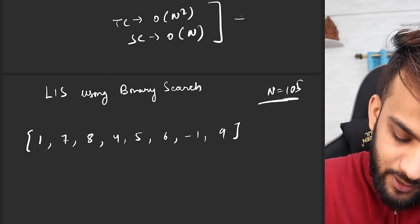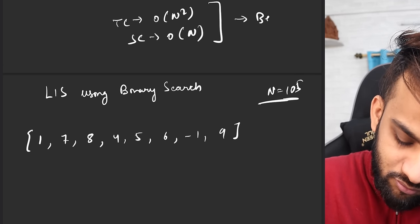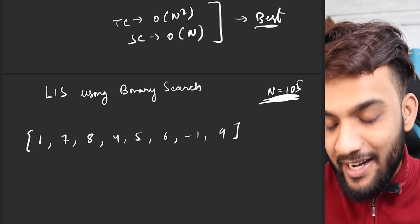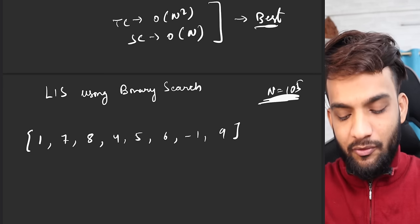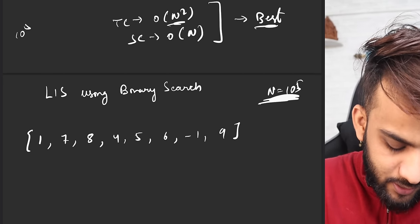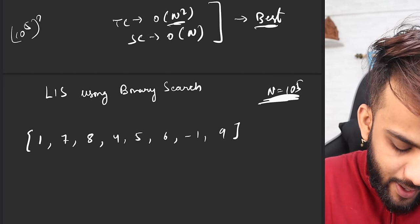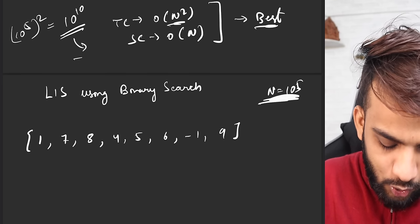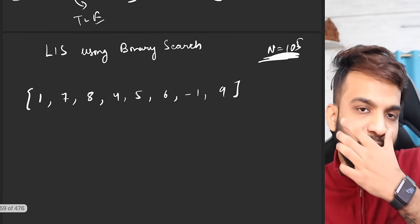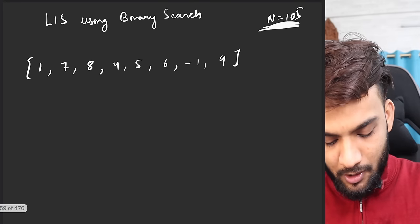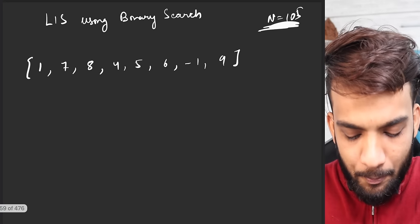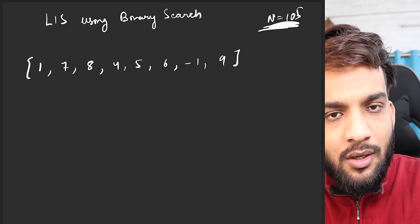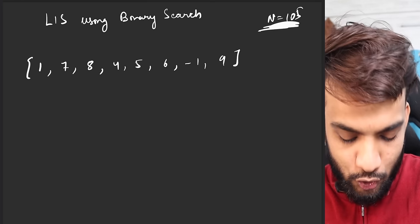That was the best we had done till now, but if n is 10 to the power of 5, then n² is 10 to the power of 10 operations, which is definitely giving you a TLE. So we definitely cannot do this. That's where something like binary search comes in — can we find LIS using binary search?